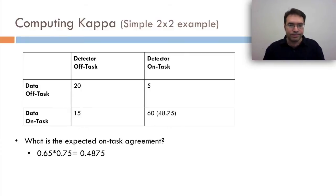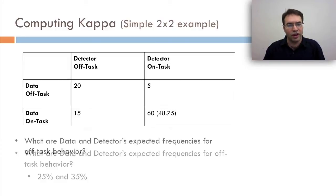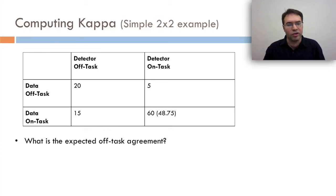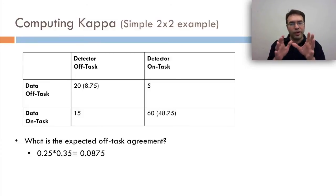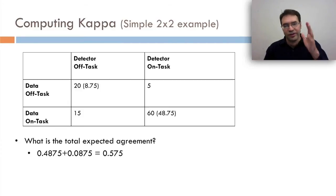So we can put that in the bottom right column. Now, what are data and detectors expected frequencies for off task behavior? We want to look at the detector off task column and the data off task row. What we get is 20 plus 15 is 35% for detector off task and 20 plus 5 is 25% for the data off task. So what's the expected off task agreement? It's going to be that 25% times that 35%, which equals 8.75%. So if we take these two, we should expect agreement of on task in 48.75 cases and agreement on off task in 8.75 cases for a total expected agreement of 57.5%.